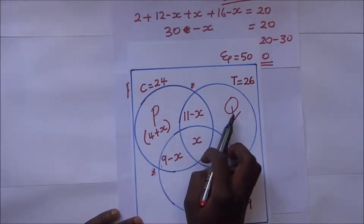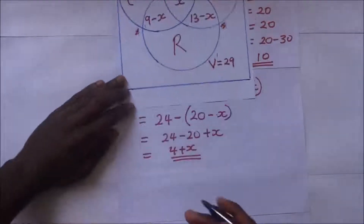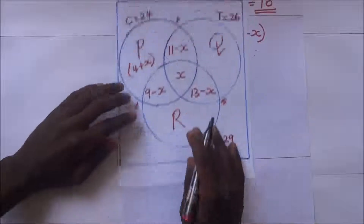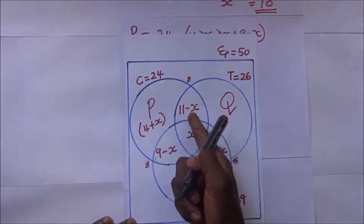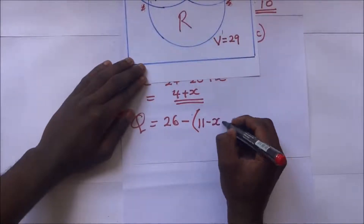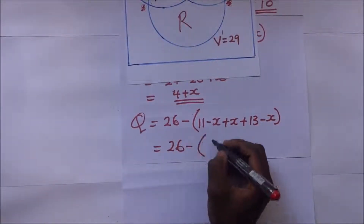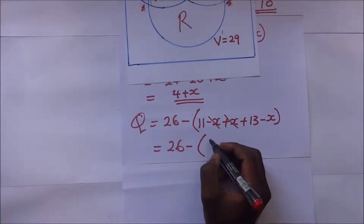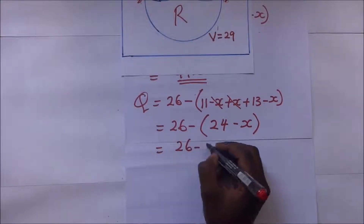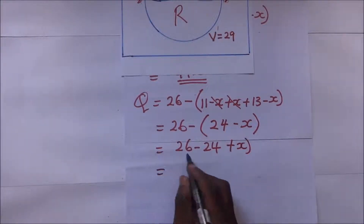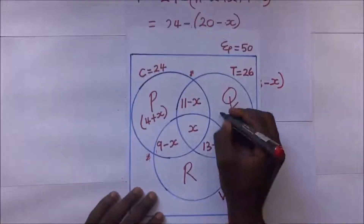To find q (tennis only), we take the total tennis circle of 26 and subtract the overlapping regions. So q = 26 minus (11 minus x) minus x minus (13 minus x). Simplifying: q = 26 minus 24 plus x, giving q = 2 plus x.